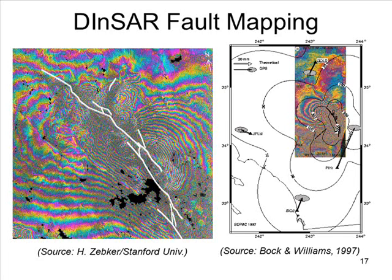So if you have a synthetic aperture radar and you're getting a return from it at one point, and then later — maybe a year or two years later — you fly over that same area, you can compare the phases of the return signals. Those phase differences show up as fringes. Where the fringe frequency starts increasing very rapidly, that's where the land is shifting. One can look at where stress is being manifested as strain — a physical motion of the Earth's crust — just by looking at these interference fringes.